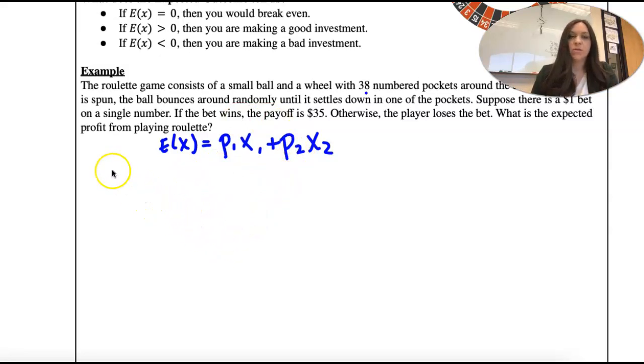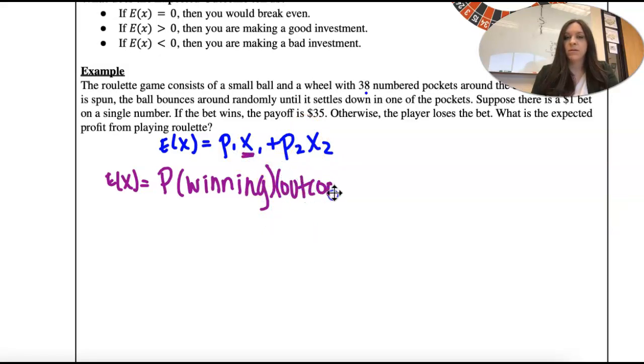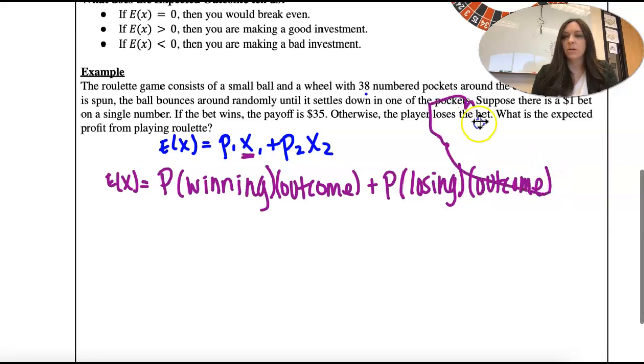Okay, so let's go with winning first. What's the probability of winning roulette? And if you win, how much do you get? That's the outcome. Plus the probability of losing. And then what's the outcome if you lose?